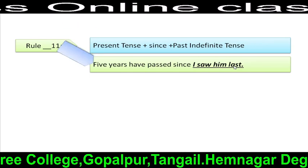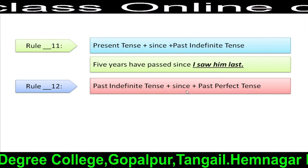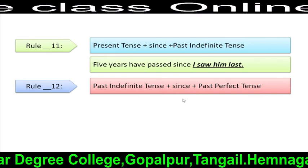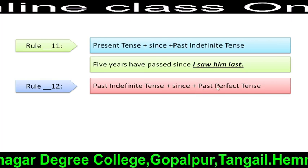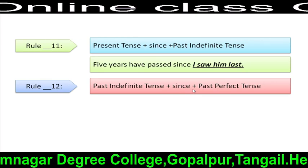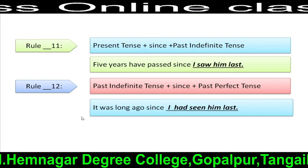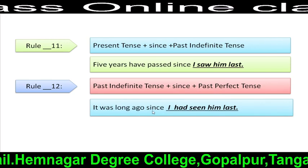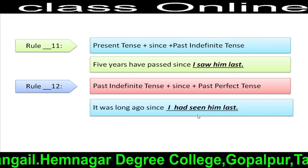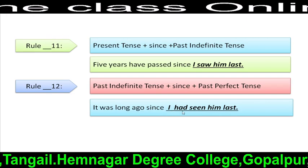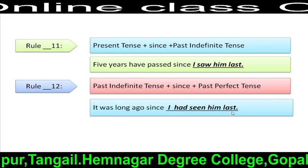Rule 12: Simple past tense + since + past perfect tense. In this case, we have to use past perfect tense after 'since'. For example: 'It was long ago since I had seen him last.' Here, after 'since', 'I had seen him last' is an example of past perfect tense.